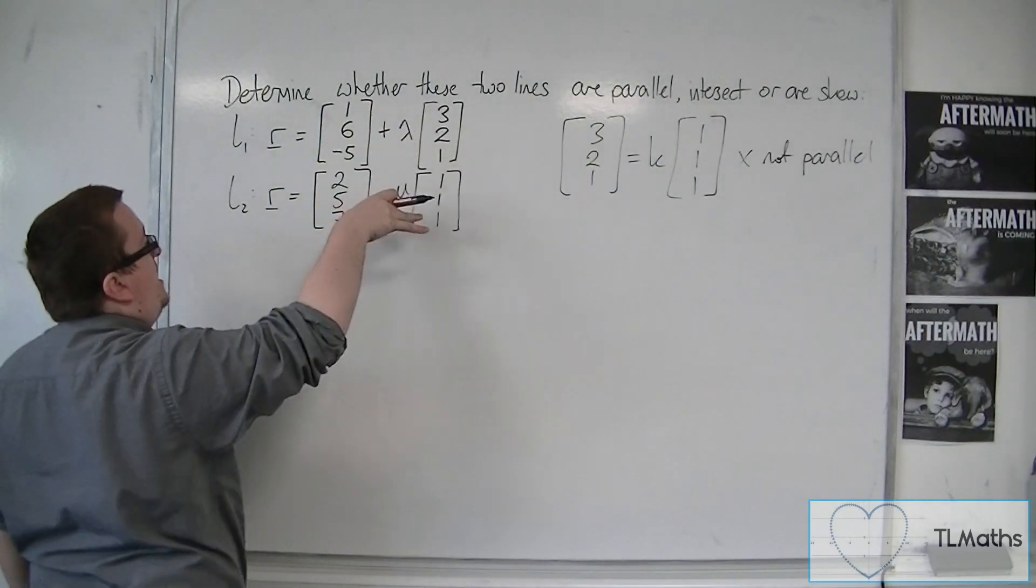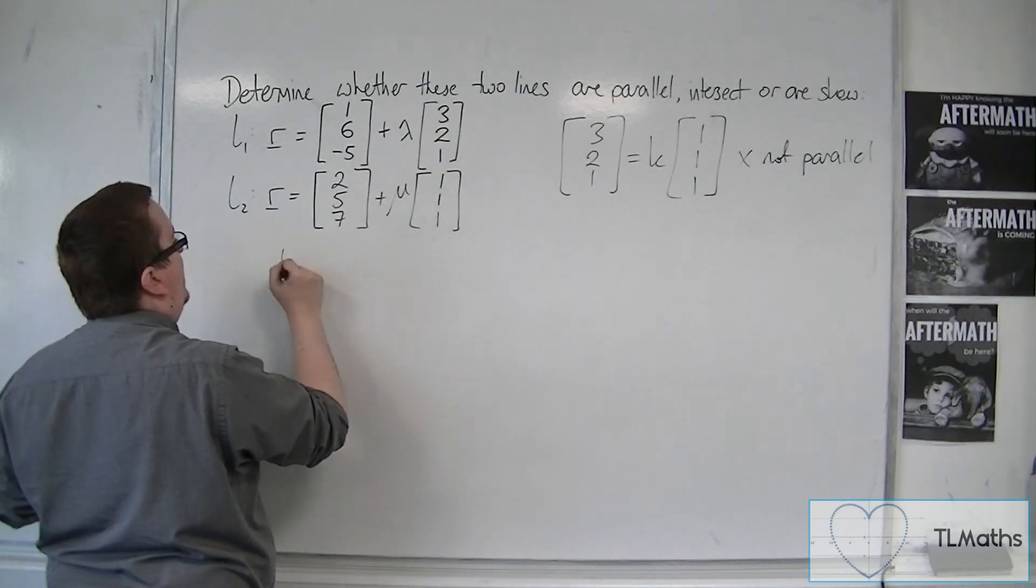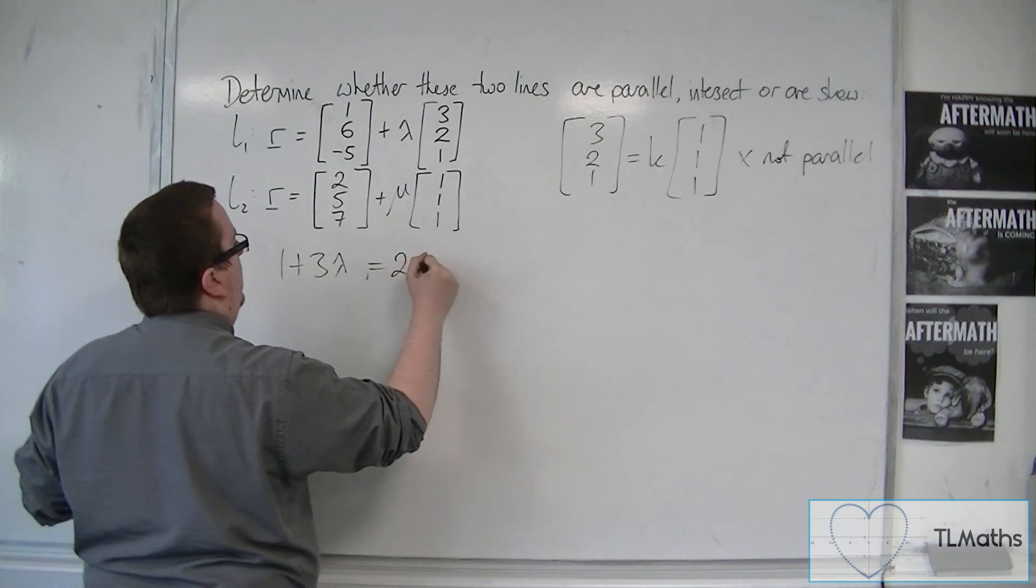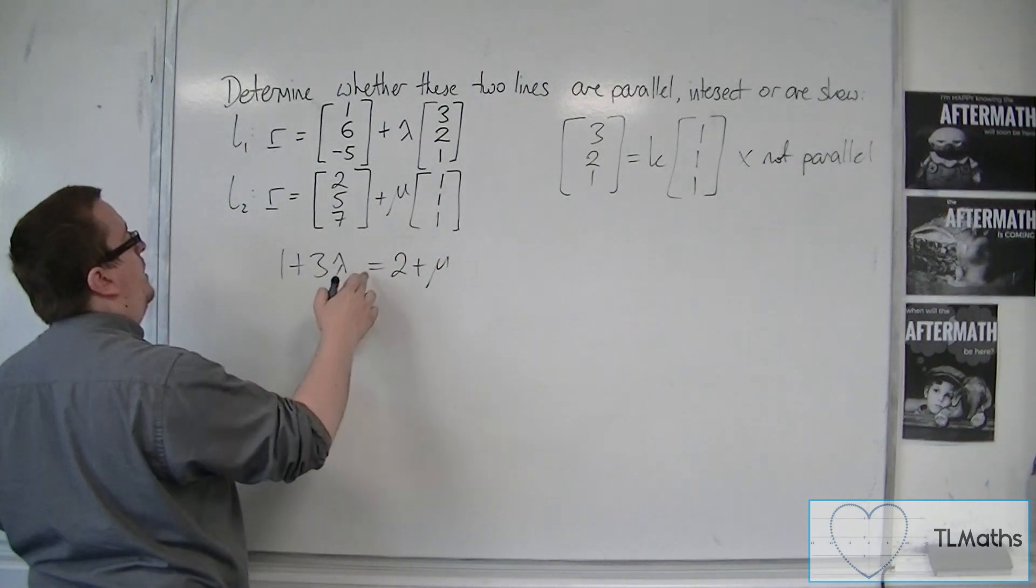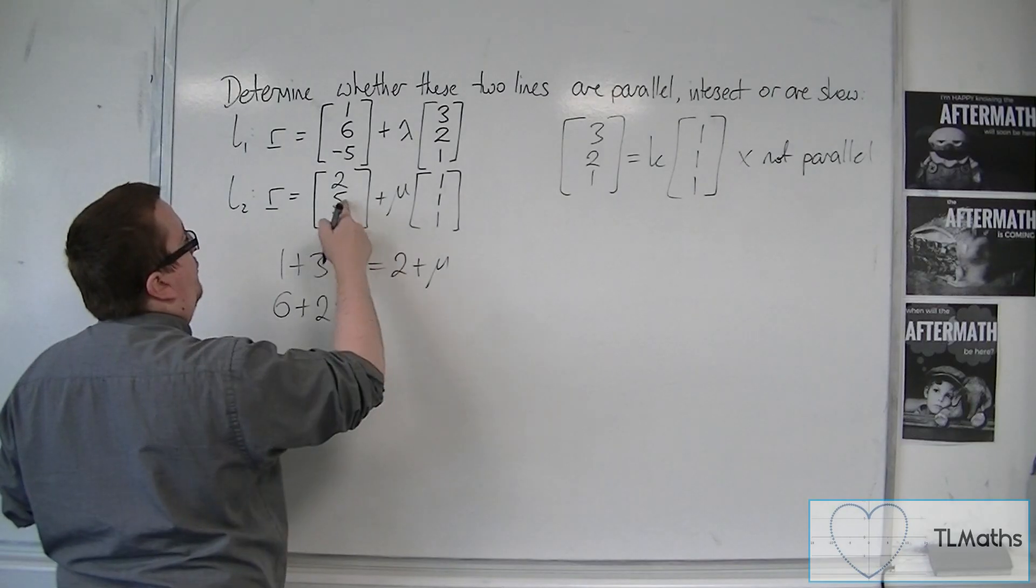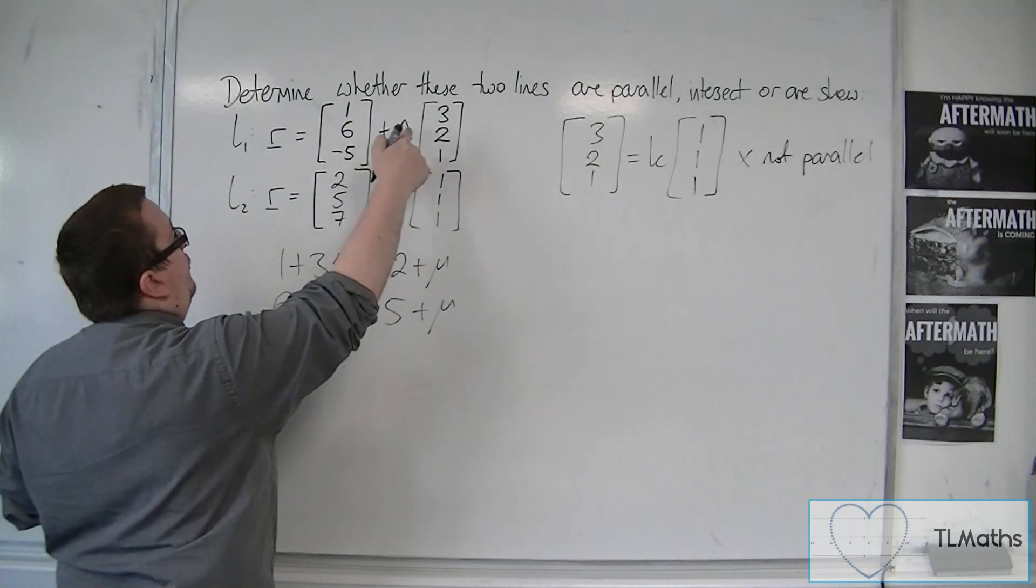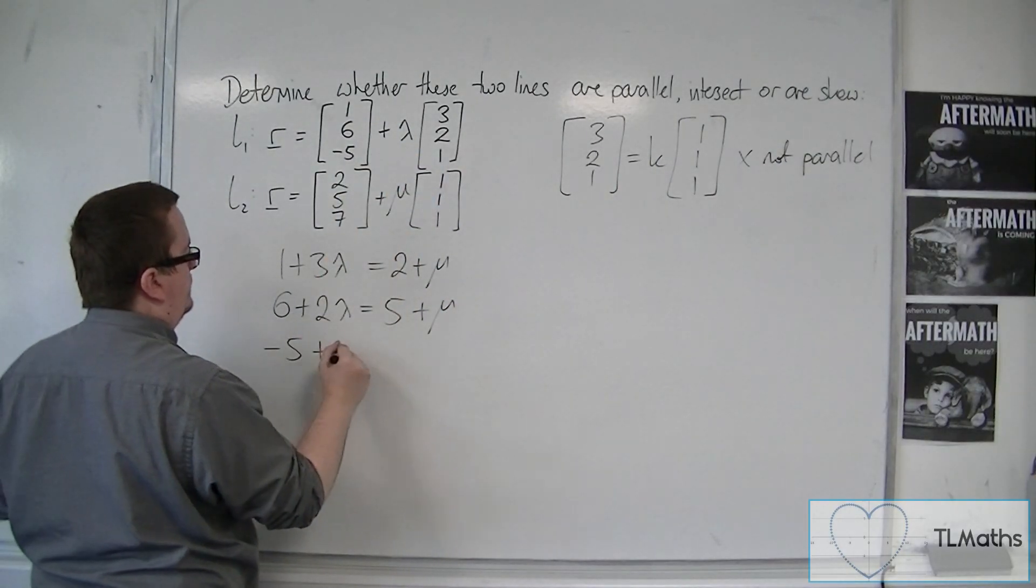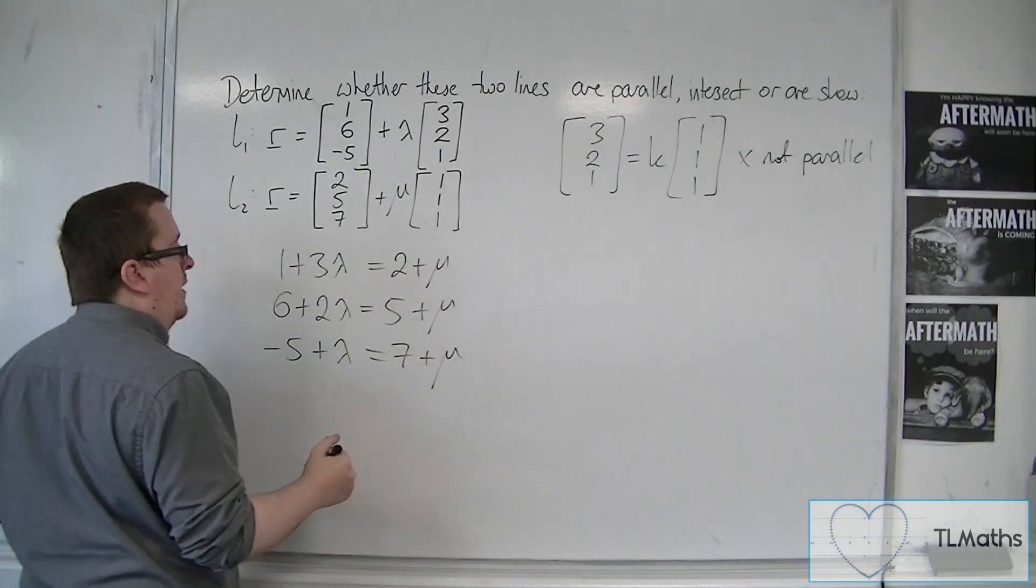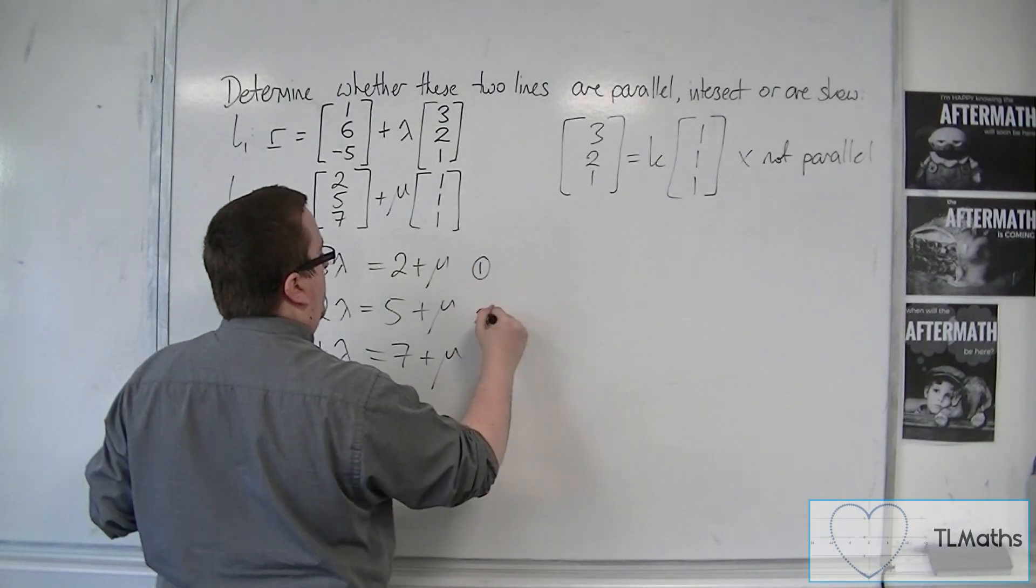So then we build up three simultaneous equations. One from the top row, so 1 plus 3 lambda is equal to 2 plus mu. That's the top row. You've got the middle rows, so 6 plus 2 lambda is equal to 5 plus mu. And you've got minus 5 plus lambda is equal to 7 plus mu. So we now have three simultaneous equations.